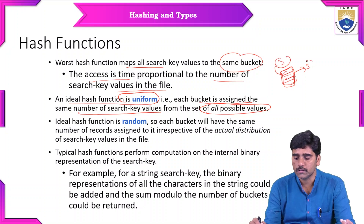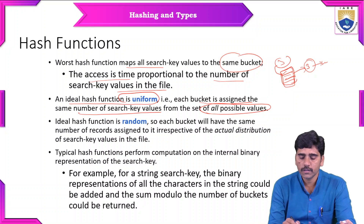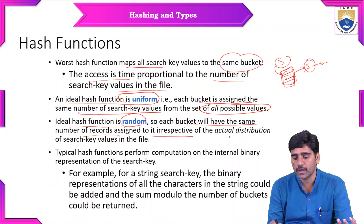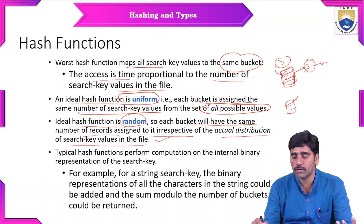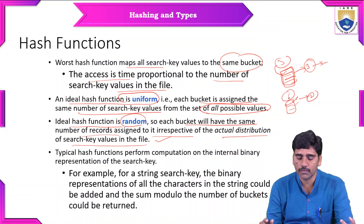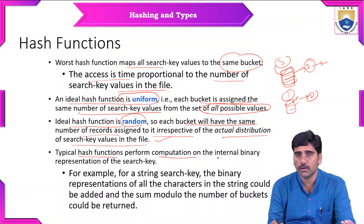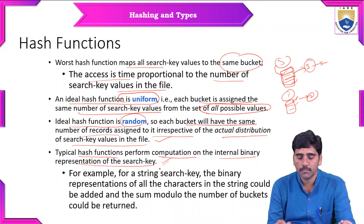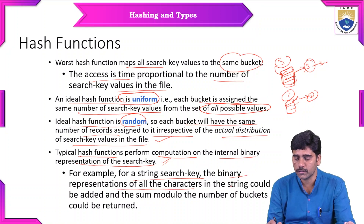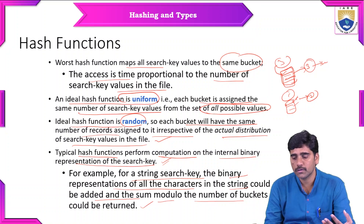If a bucket contains three values, the same number of search key values are assigned, making it uniform. The ideal hash function is also random — each bucket will have the same number of records assigned to it irrespective of the actual distribution of search key values in the file. Typical hash functions perform computation on the internal binary representation of the search key. For a string search key, the binary representation of all characters in the string could be added, and the sum modulo the number of buckets could be returned.